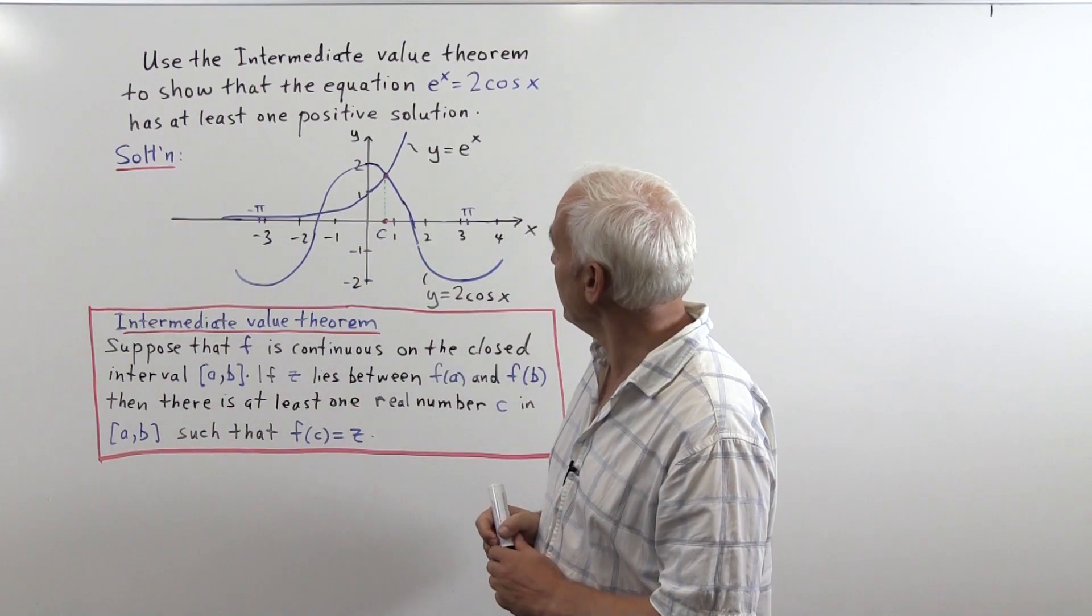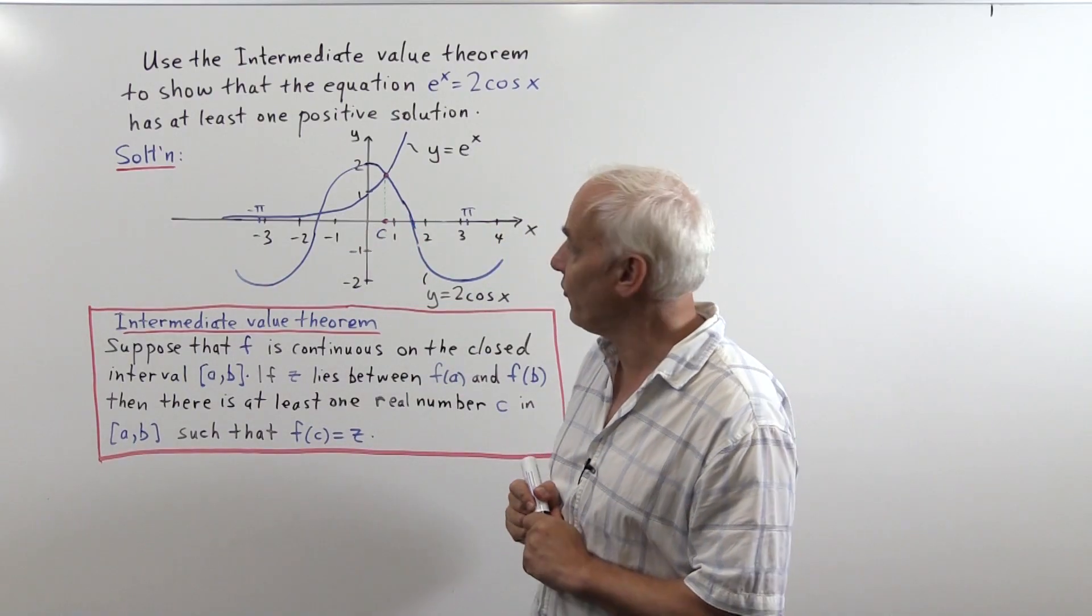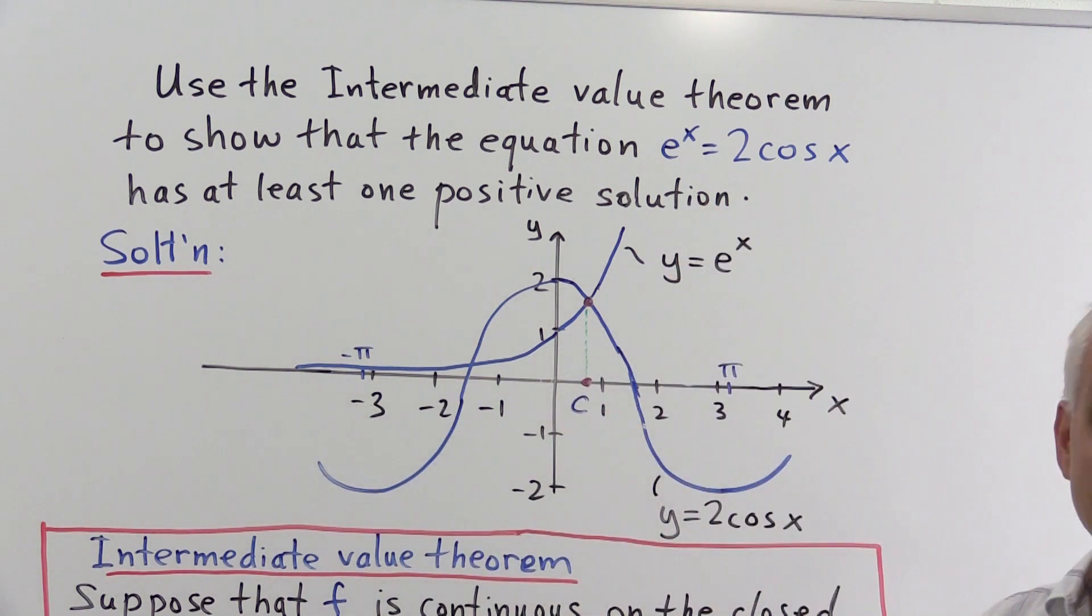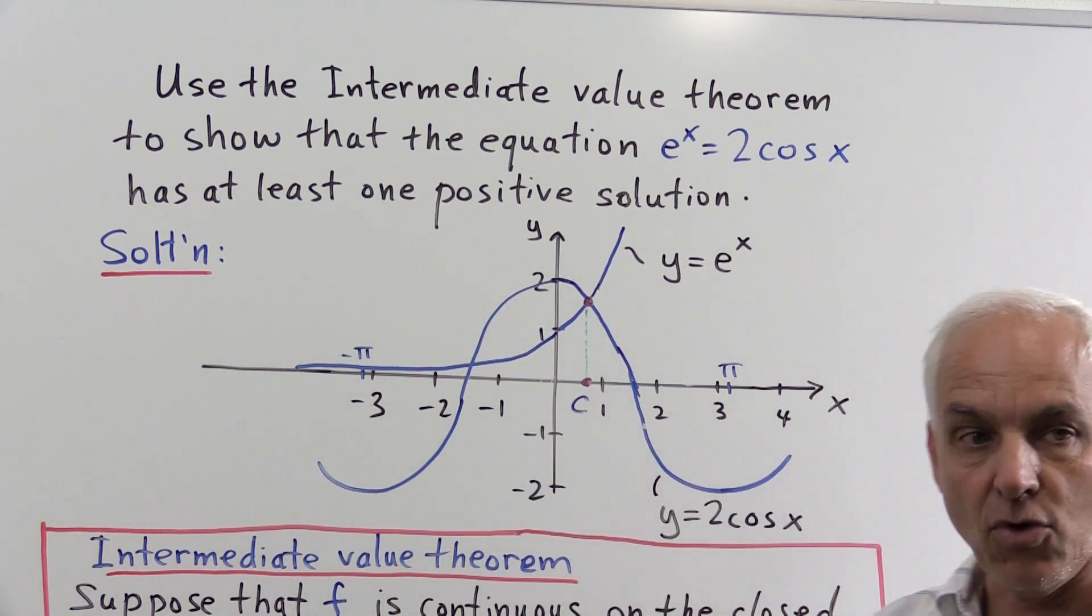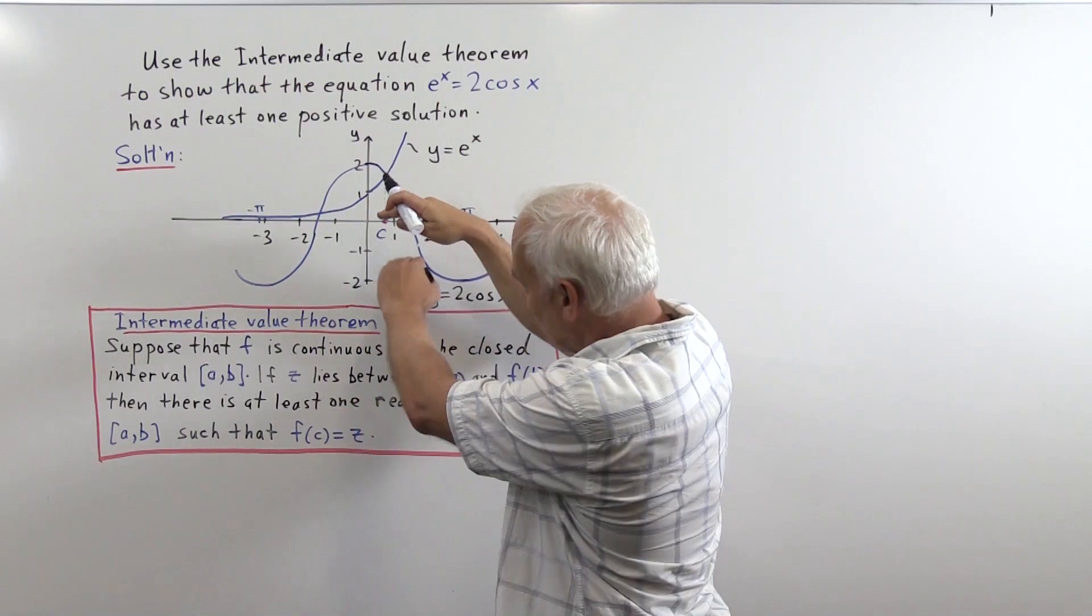Here are the graphs of e^x and 2cos(x). Here's the graph of e^x. Here's the graph of 2cos(x), which is just like cos(x) except it's twice as big.